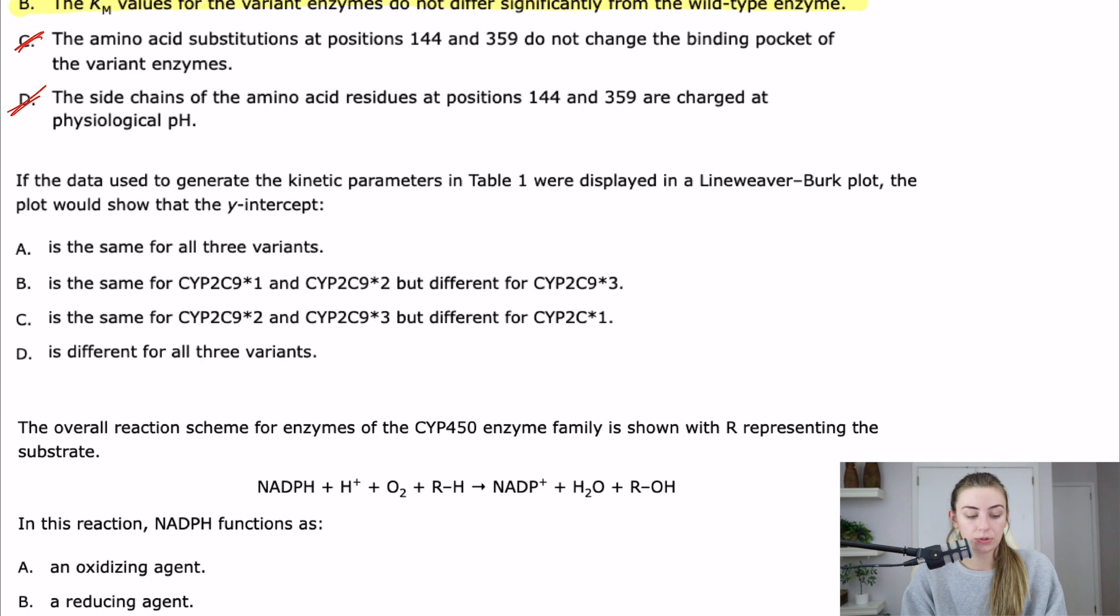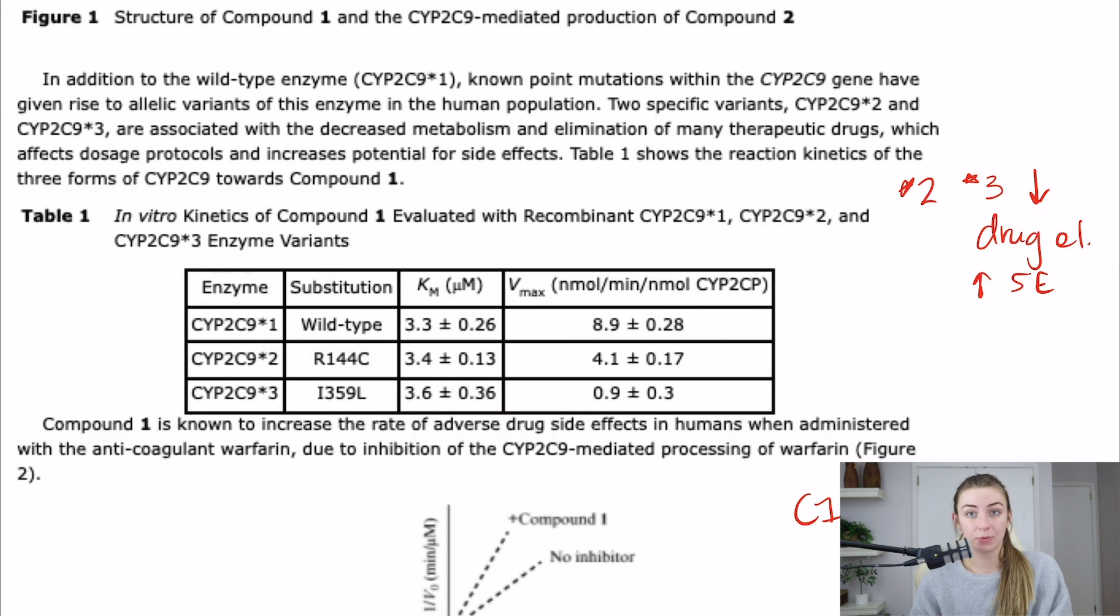Number 20 says if the data used to generate the kinetic parameters in table one were displayed in a Lineweaver-Burk plot, the plot would show that the y-intercept... So what's the y-intercept in a Lineweaver-Burk plot? It's one over Vmax. So basically, this question is asking, what's the difference between the Vmaxes of the variants? So I know that we already did this when we were doing our figure interpretation. But we saw that the Vmaxes were all wildly different. So one over these Vmaxes would be wildly different. The y-intercepts would be different for each variant.